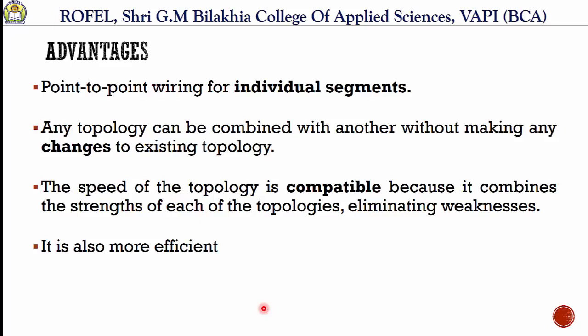The third advantage is that the speed of the topology is good because it combines the strength of each topology while eliminating the weaknesses. It combines the strengths of both topologies, so the speed is good and the weaknesses of all topologies are eliminated.